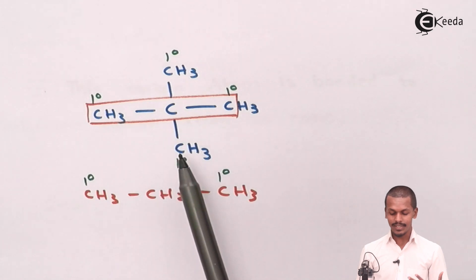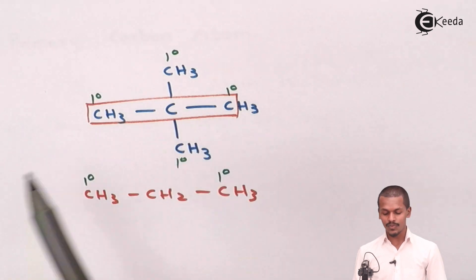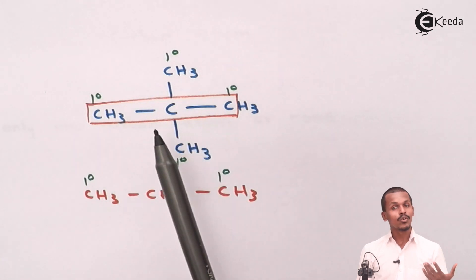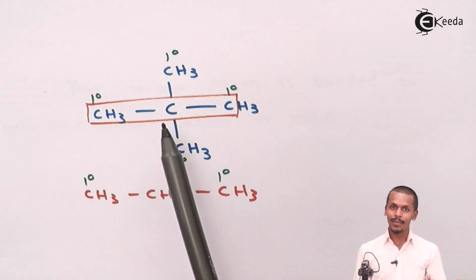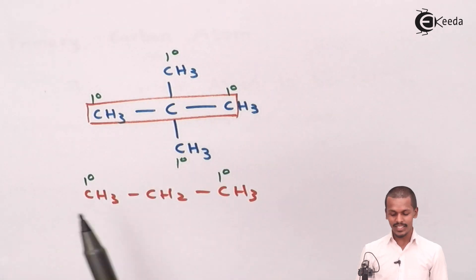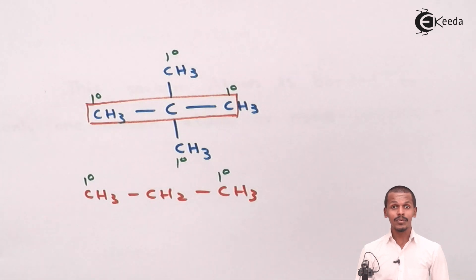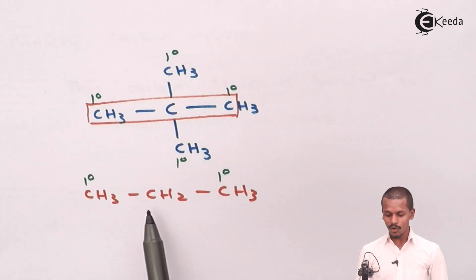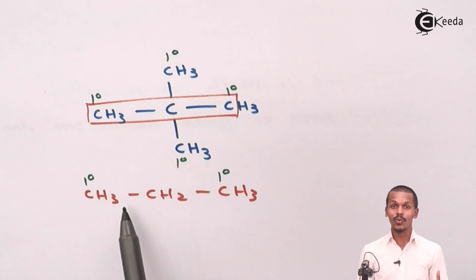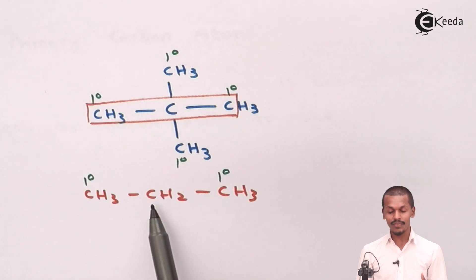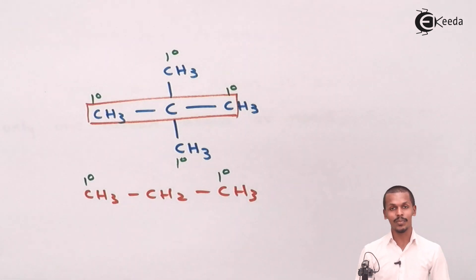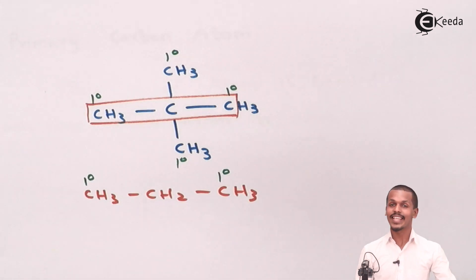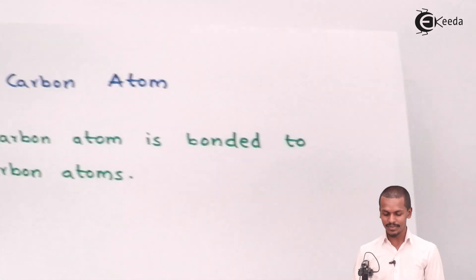The IUPAC name of the branched example is 2,2-dimethylpropane, while the straight chain is propane. The middle carbon in propane is attached to two carbon atoms, making it a secondary carbon atom. Let us discuss what secondary carbon atom means.